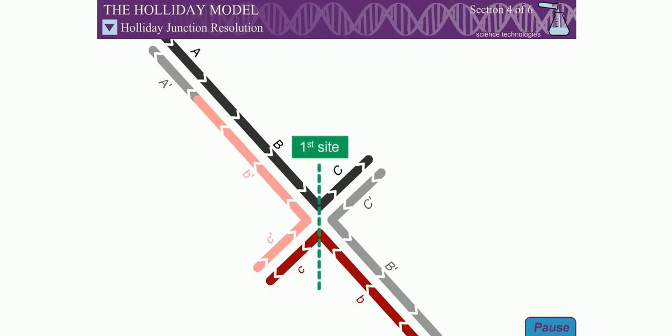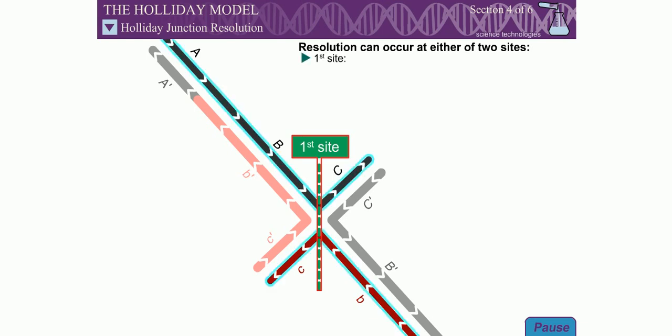Resolution can occur at one of two possible sites. Cleavage at each of these sites results in a different genetic outcome. One of the possible cut sites is in the pair of strands that remained uncut during the first step of recombination. These strands can be easily identified because they each consist of a single color at this point in the model.